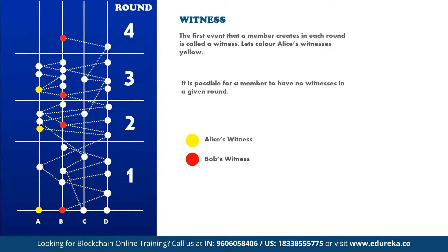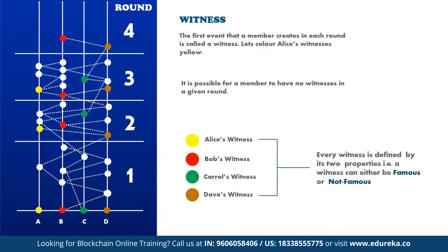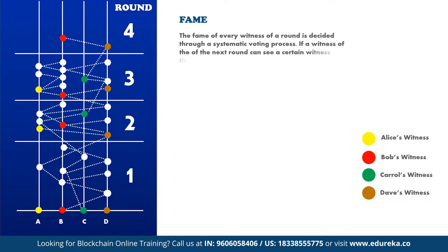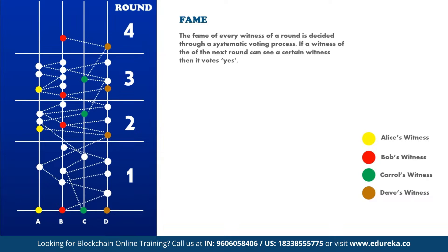Every witness has a property by which it is known to the network — a witness can either be famous or not famous. To determine fame, we consider the witness B2. The fame of B2 is determined by considering the witnesses A3, B3, C3, and D3 in the next round. The idea for B2 to count as famous is that it should be seen by many of the witnesses in the next round, so there is an election in which most of these witnesses vote on whether B2 is famous.